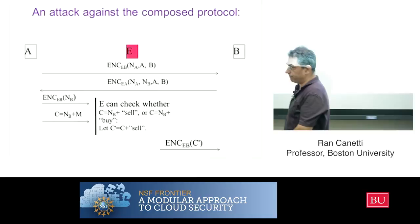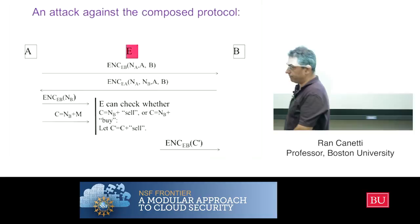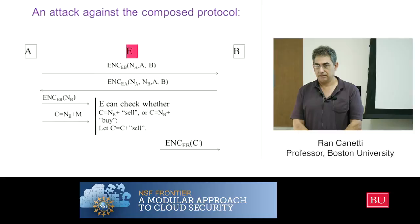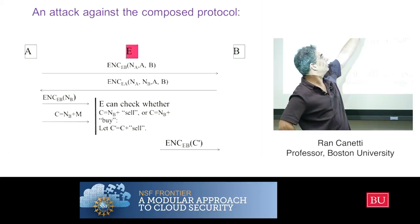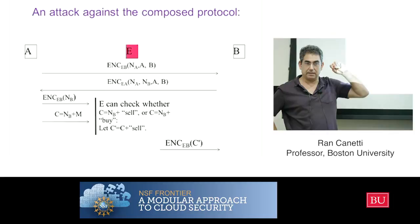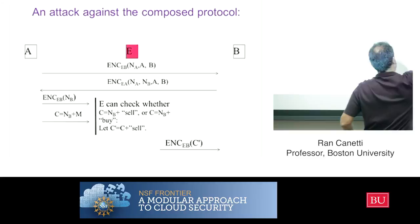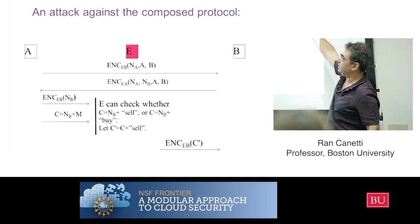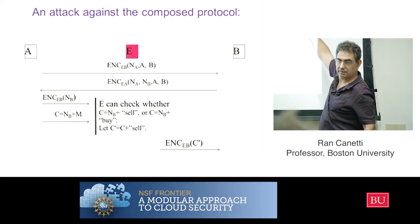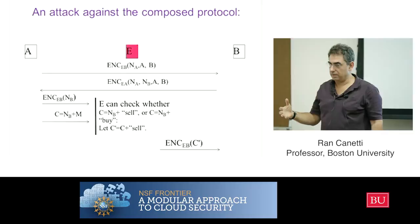Just by combining the two things, the attacker breaks security — he learns which message bi was used. You could fix it by having B send an acknowledgement, but the protocol didn't specify that. Another fix: if the parties had chosen NA instead of NB as the shared key, that would also fix it, because B is effectively acting as an oracle you can query with candidate values of NB.